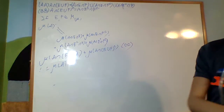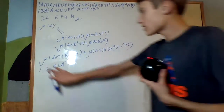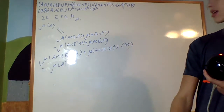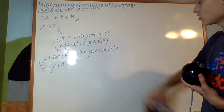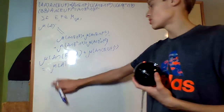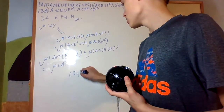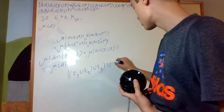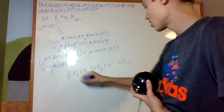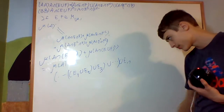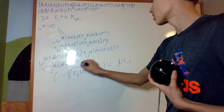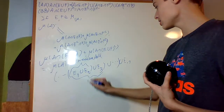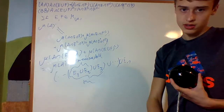We've proven that two measurable sets union together are measurable, because we have A∩(E∪F) and A∩(E∪F) complement. This very quickly extends to finite unions: if I have E1∪E2∪E3∪...∪En, by induction this is measurable, extending outwards through each of the parentheses.